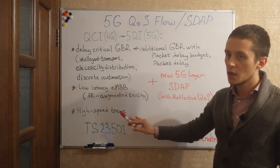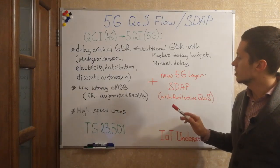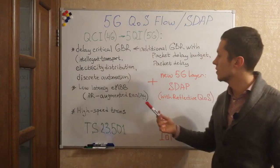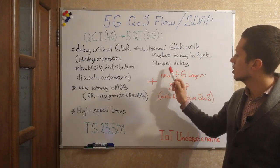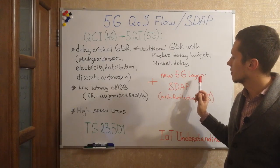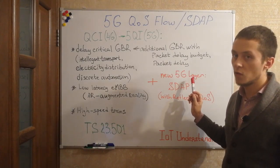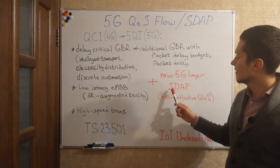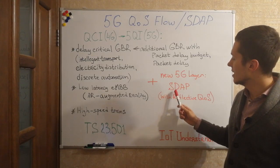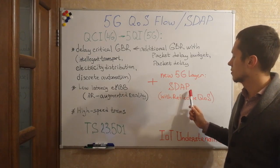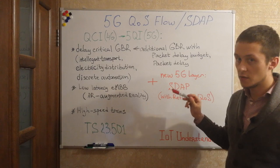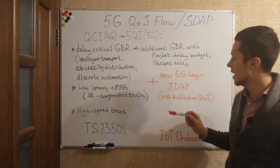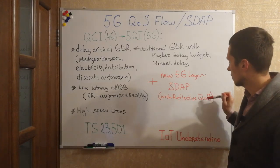Apart from this, in 5G, in order to support all of this, a new layer was introduced for the radio interface user plane. It's called Service Data Application Protocol, or SDAP. And this new layer may support a new and interesting feature called reflective quality of service.